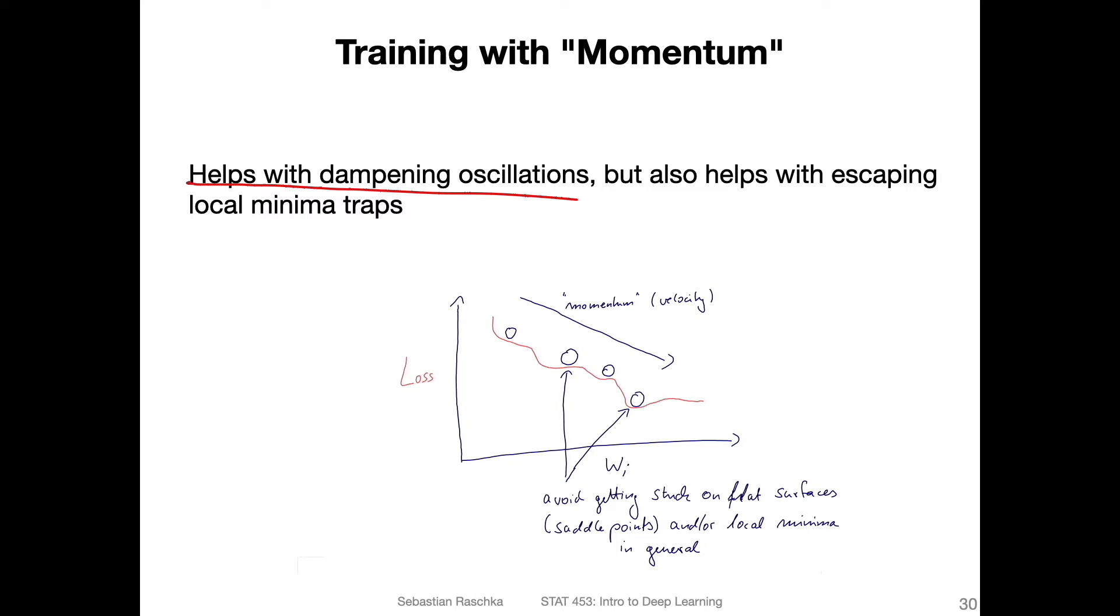I was trying to illustrate this in this drawing at the bottom. Here, this is our loss for some weight wi, a very simplified loss curve. This red line here is our loss. And these circles are the current locations at a current time step: time step one, time step two, time step three, time step four. And it may happen you go down here.